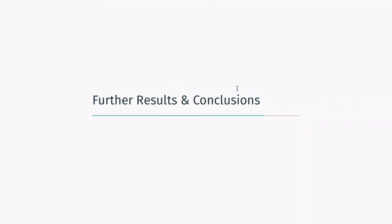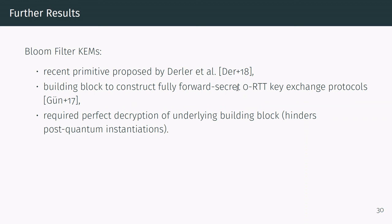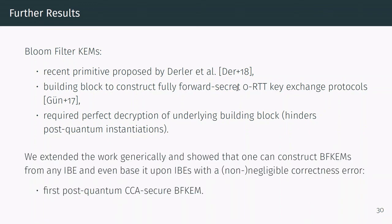In the paper, we also showed how the same ideas can be used to obtain the first post-quantum CCA-secure bloom filter KEM (BFKEM). BFKEM is a primitive proposed by Derler et al. in Eurocrypt 2018, shown to be a building block for fully forward-secret 0-RTT key exchange protocols. However, that work required perfect decryption of the underlying building block, preventing post-quantum instantiations. We extended that line of work and showed how one can generically construct BFKEMs from any IBE, even from ones with non-negligible correctness error, leading to the first post-quantum CCA-secure BFKEM instantiations.